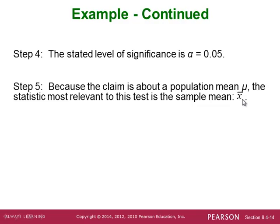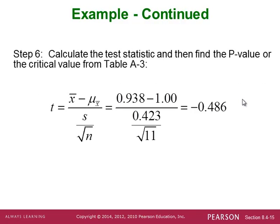Of course, we use x-bar as our statistic, and then this right here is our test statistic for our t-test statistic. So x-bar, we already calculated that, that was 0.938. And our hypothesized mean from the null hypothesis was 1.00. Our sample standard deviation was 0.423 divided by the square root of the sample size 11. Now be careful when you calculate this. You have to put this entire denominator in parentheses. And that gives us a t-test statistic value of negative 0.486.